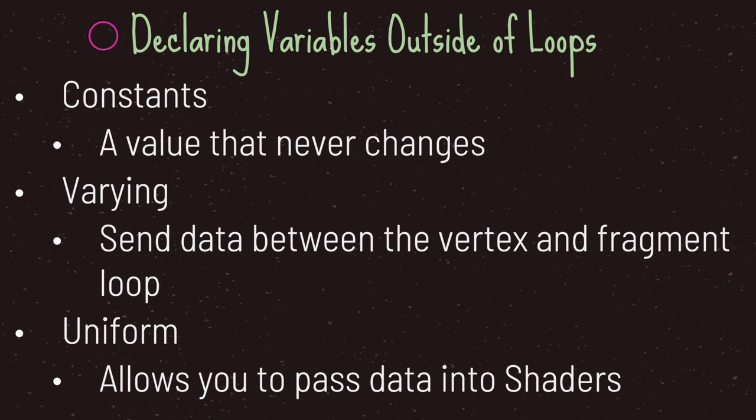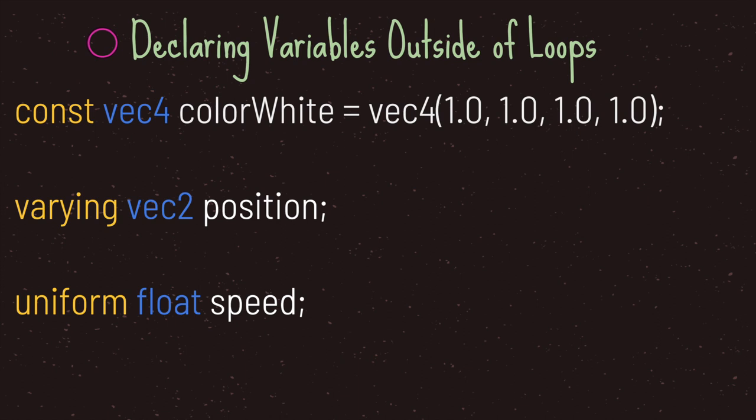The first initialization type is constant, used to declare a value that never changes. The second type is varying, used when you want to send a value between the vertex and fragment loop. The last type is uniform, used when you want to pass data into your shader files. Let's take a look at an example.